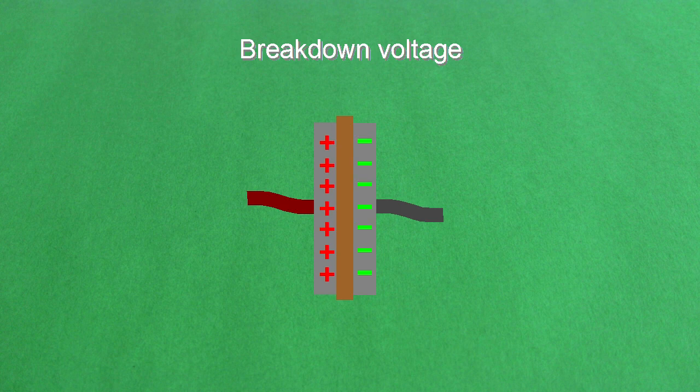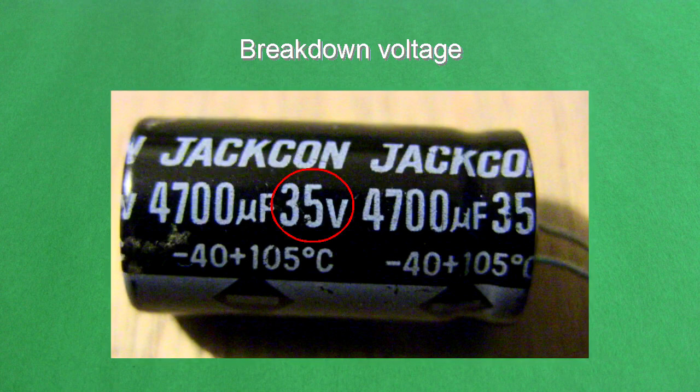Another issue is the breakdown voltage, or dielectric strength, of the dielectric. I said the dielectric is an insulator and doesn't conduct electricity, but it can physically break down or be damaged, and the spot where it breaks down can become conductive. When you buy a capacitor, the voltage that you see written on it is the breakdown voltage.